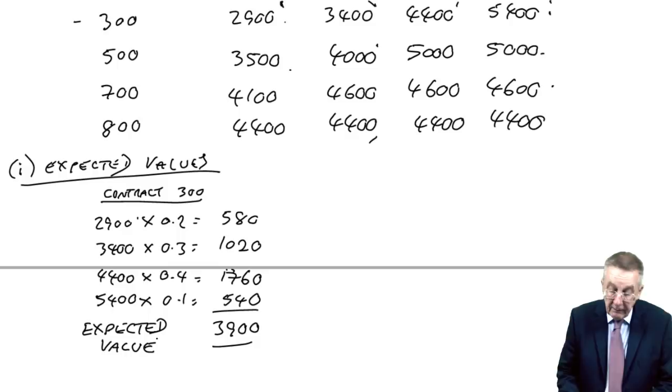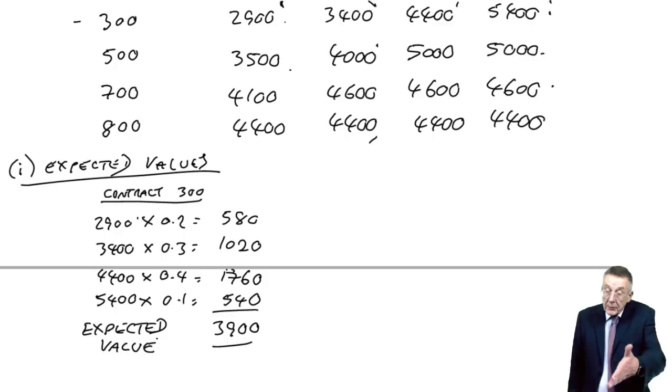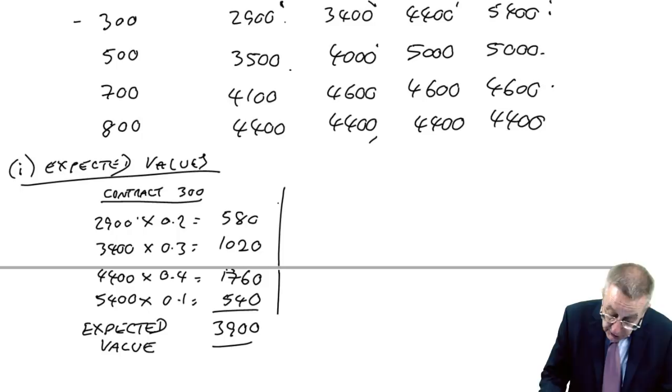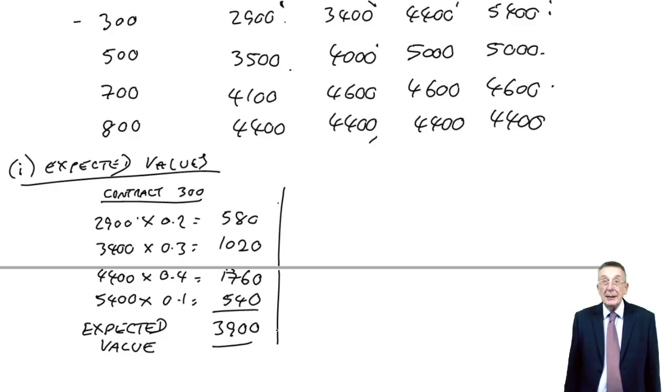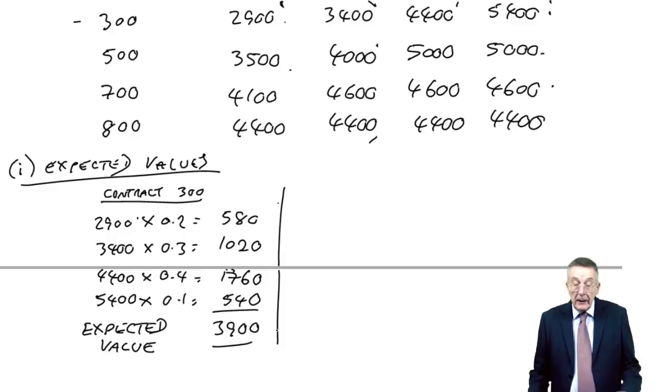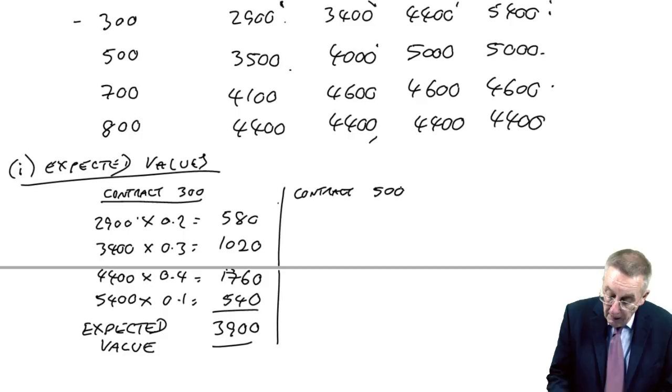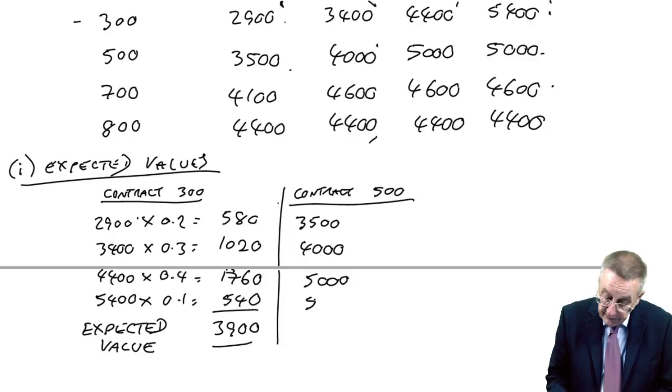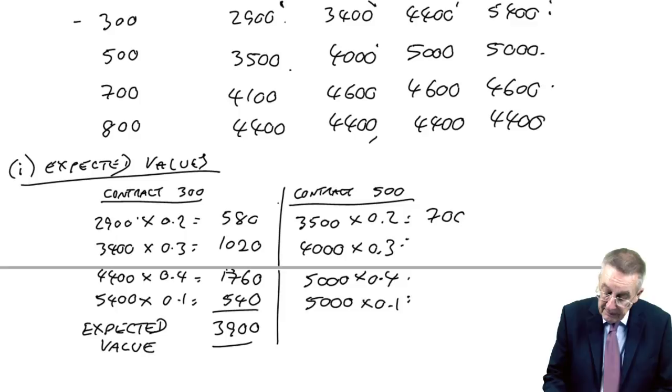Well, that was contract size at 300. We do the same for each of the choices available. Work out the expected value. And then we'll choose whichever contract size gives us the highest. So, if I now do it for contract at 500, the returns are what? It's 3,500, 4,000, 5,000, 5,000. The probabilities again. And so if I multiply and add. 3,900, 4,400. Expected.